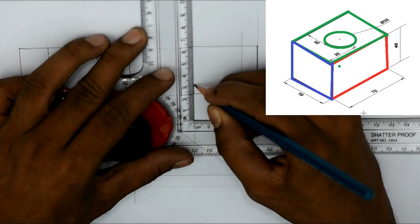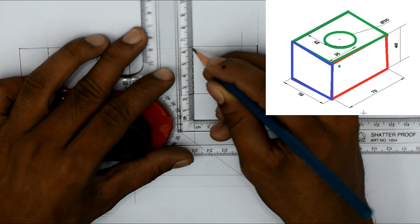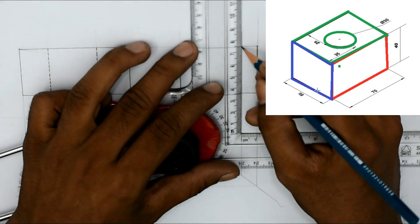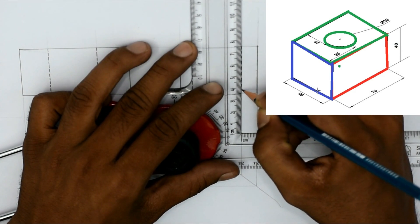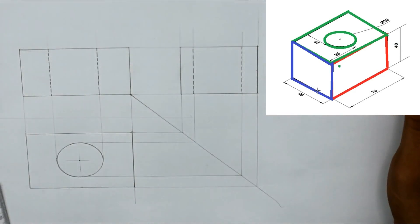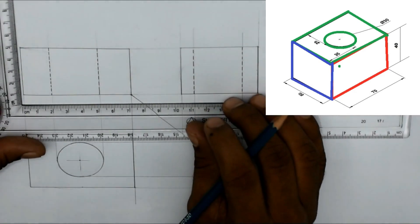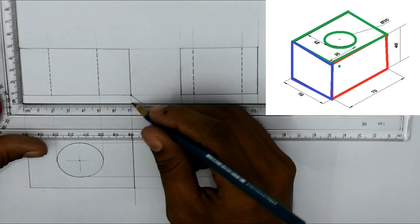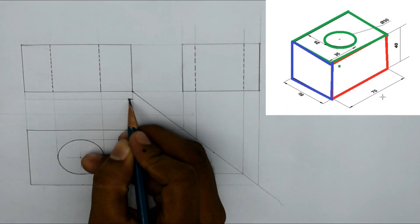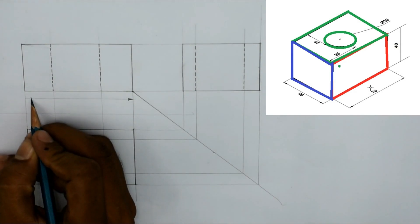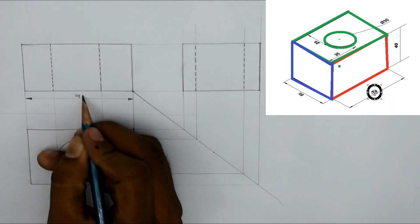The left hand side view is generated. Again there will be hidden lines. Why? The same reason. When we are seeing from the left hand side we are getting only one rectangular shape, but there is a circular hole behind this. That is why we are getting these hidden lines.